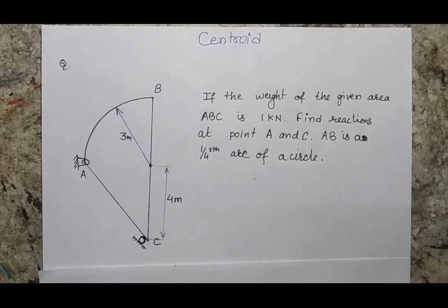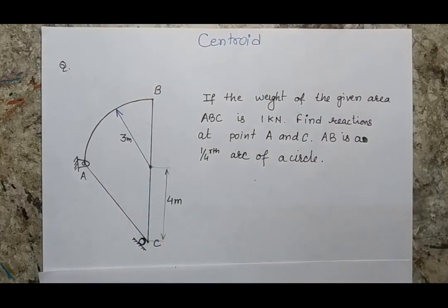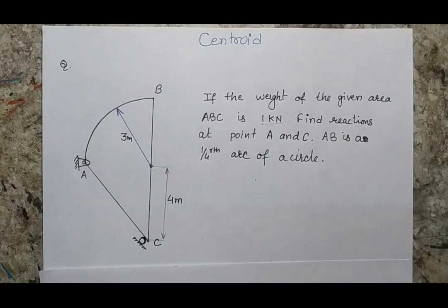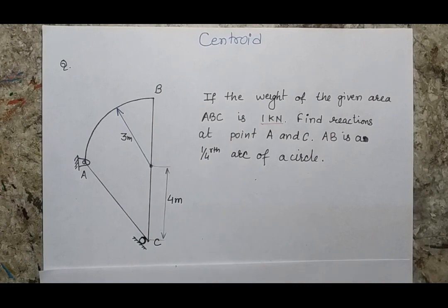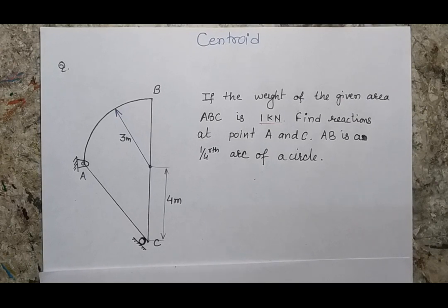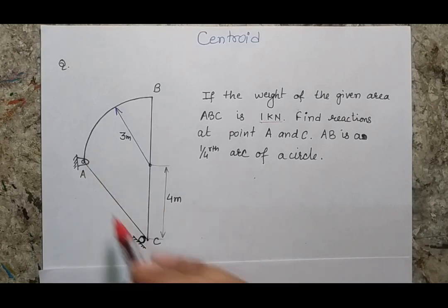Looking at this problem, the problem statement says that if the weight of this planar section is 1 kN, I have to find the reaction at point A as well as at point C. However, the position of the centroid is not given. So this is one of the advanced problems where first we have to identify the centroid of this body, and once we identify the centroid, we will be able to calculate the reaction at these two points.